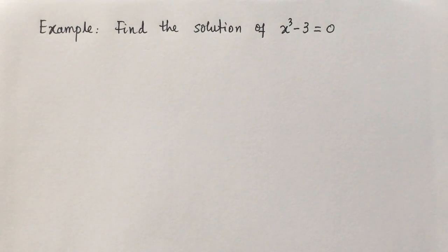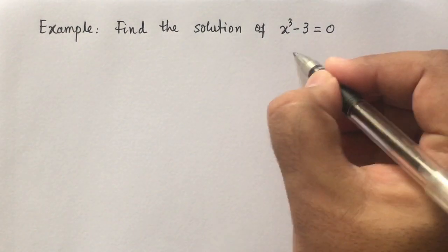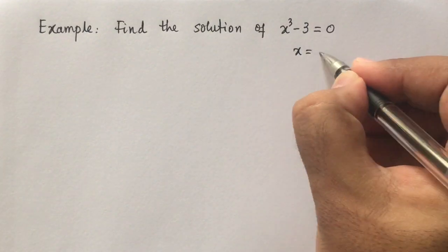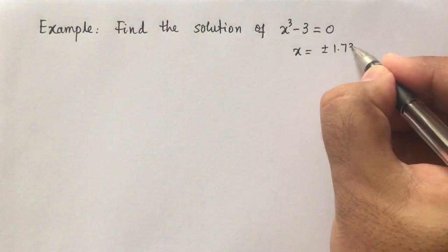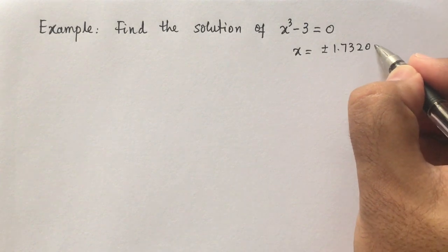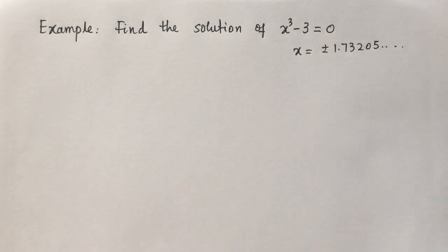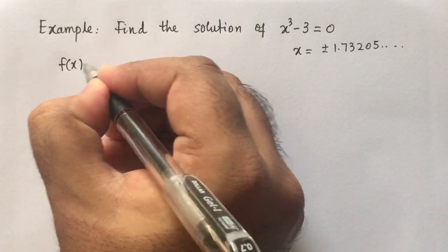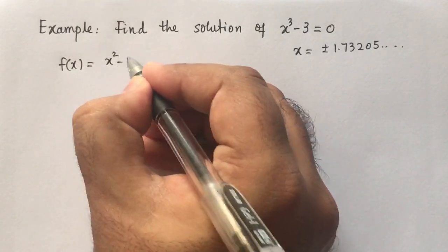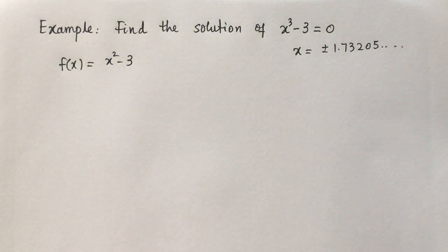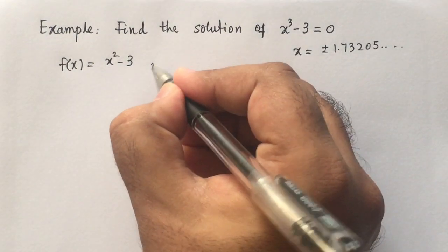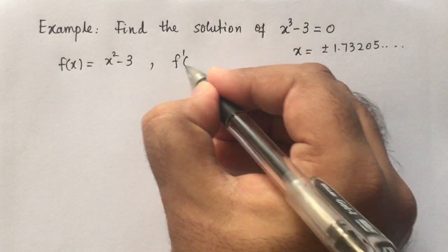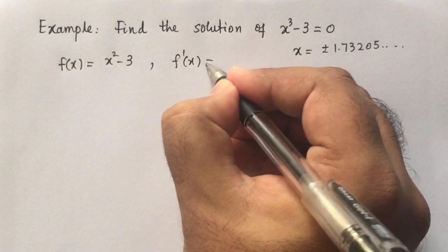Let's look at an example. We want to find the solution of x² - 3 = 0. The exact solution is ±1.73205. In this problem f(x) = x² - 3, and the derivative f'(x) = 2x.